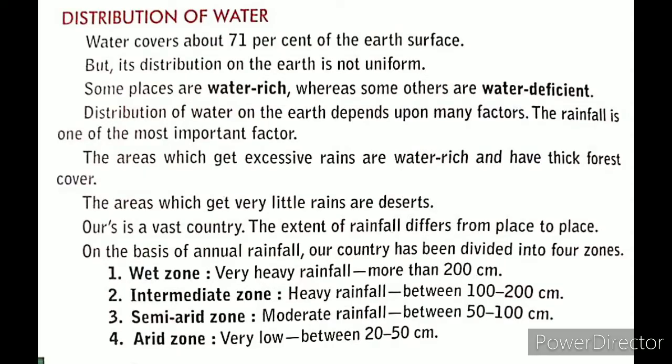We will start this video with the topic: distribution of water. Water covers about 71 percent of the earth's surface, but this distribution of water is not uniform — some places are rich in water and some places are deficient. Distribution of water on the earth depends upon many factors, such as rainfall, which is the most important factor.